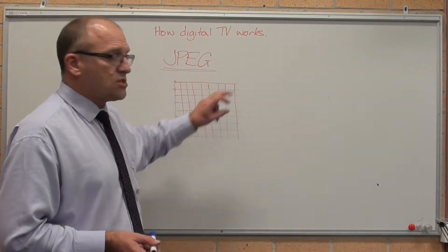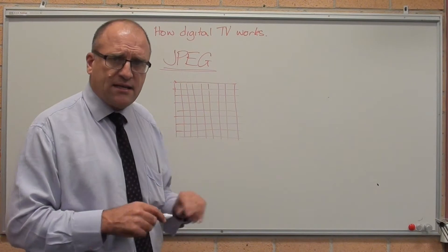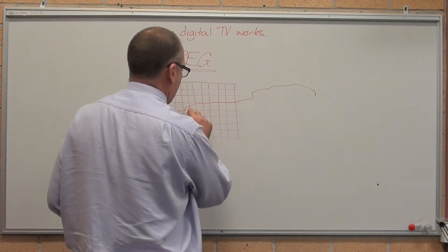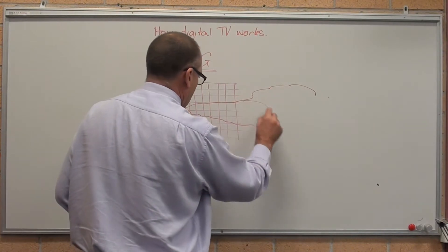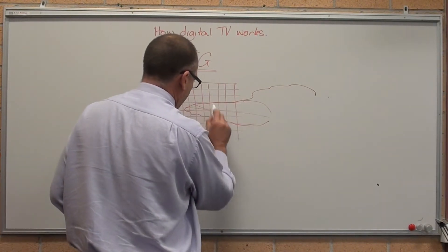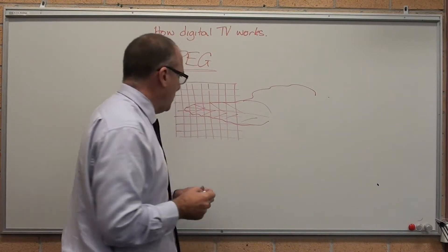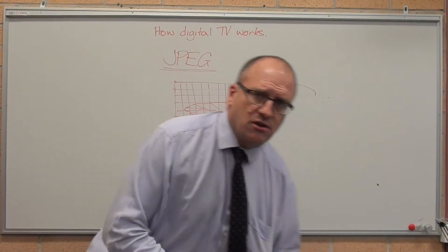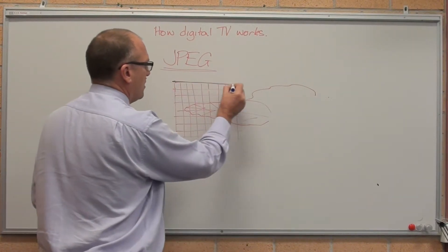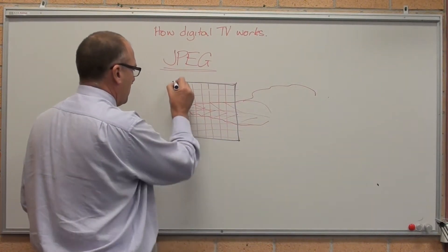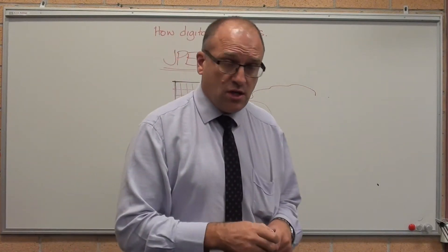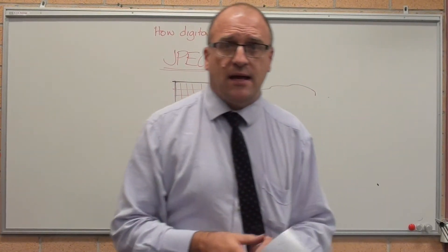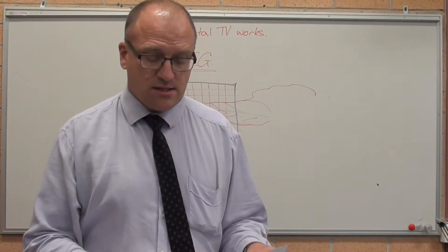JPEG works by looking at the individual picture. Let's say this is part of a tree — there's a tree leaf coming through, with a few lines. It divides up the entire picture into segments of 8 by 8, because computers work on binary. 2 cubed is 8, so it works on 8 by 8. 2 to the power of 6 is 64.